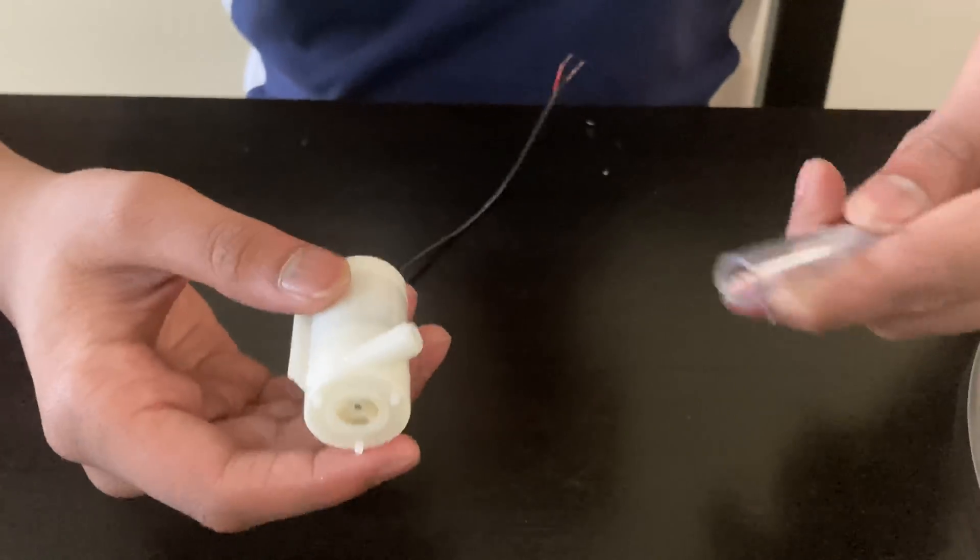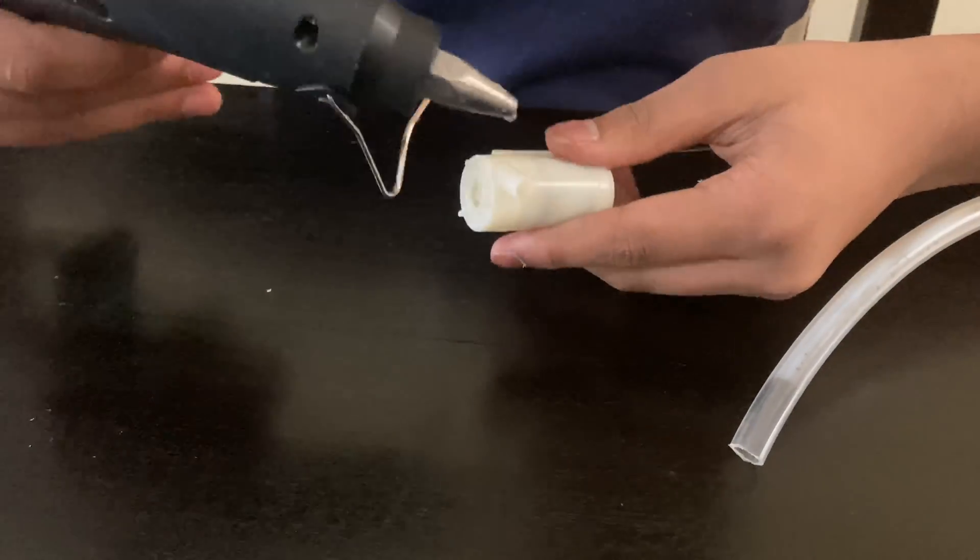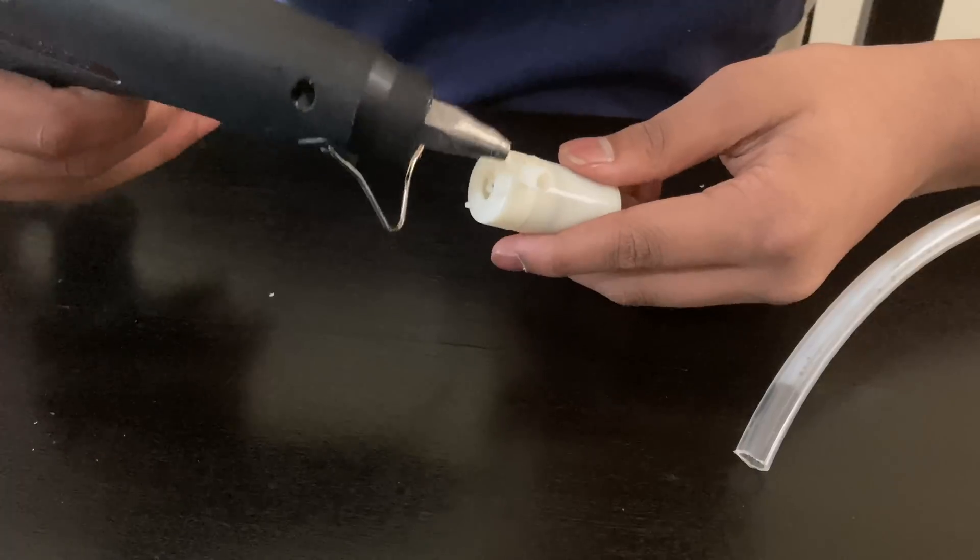So now I am going to put my pipe to the pump. My pipe is a little big so I am going to use a glue gun to make it a little more secure.